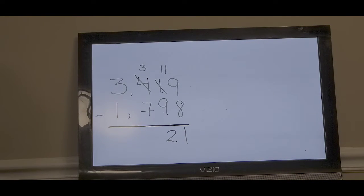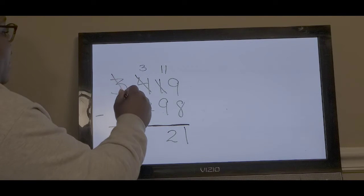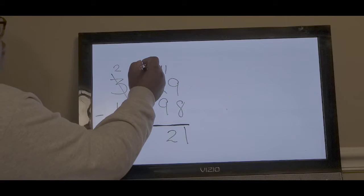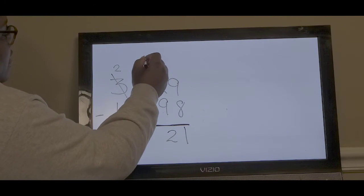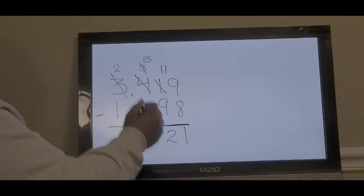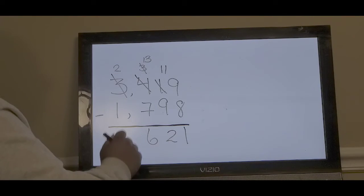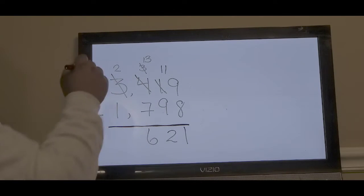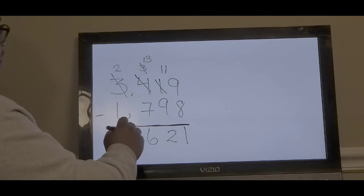Can we take away 7 from 3? No, we can't do that. We're going to have to borrow from the thousands place. We're going to borrow 10, which will give us 2. Then we're going to add that 10 to our hundreds place, which will give us 13. 13 minus 7 is 6. 2 minus 1. Can we take away 1 from 2? We can. 2 minus 1 will give us 1.